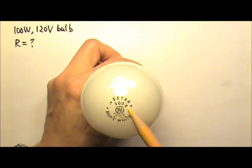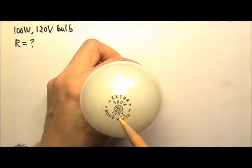Here I have a light bulb that is labeled 100 watts, 120 volts. Find the resistance of this light bulb.